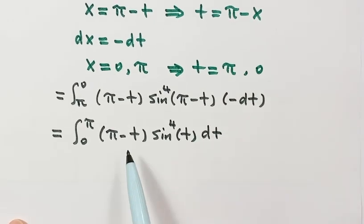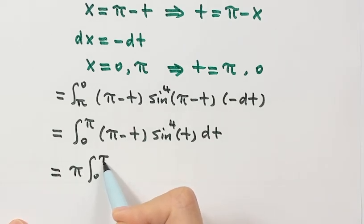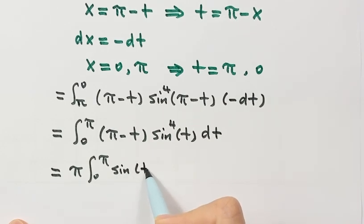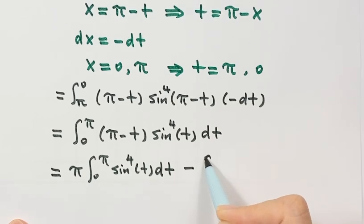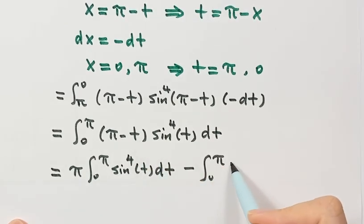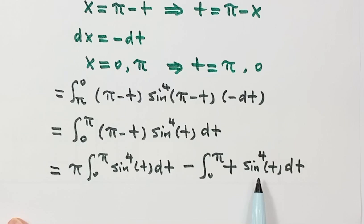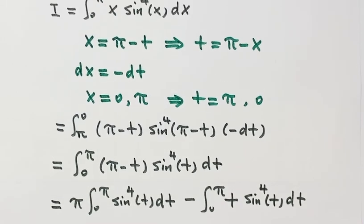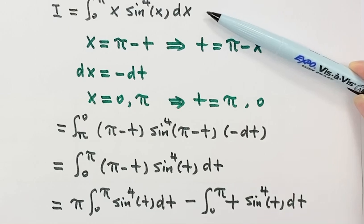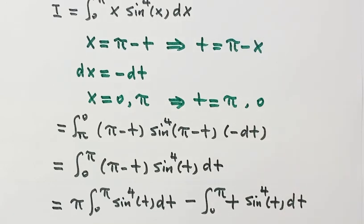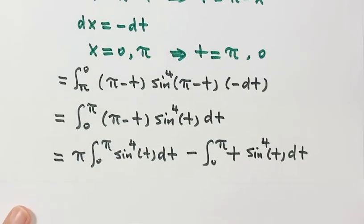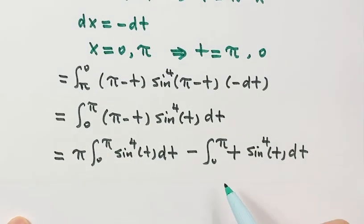Next, we are going to separate this integral into two parts. The first part has sine to the 4th, and the second integral has t times sine to the 4th. Taking a close look at the second integral — it's a variable times sine to the fourth — comparing with I, the original integral, they are exactly the same. So this second part is just I.